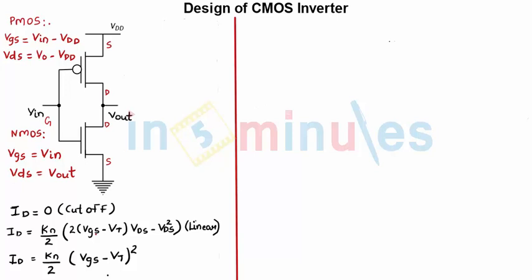Because we get the full output voltage swings, the noise margin is relatively wide. That means CMOS inverters have good noise margin compared to any other load inverters.